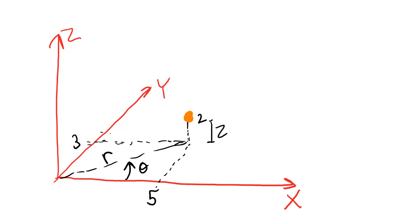Now the location of the point did not change, but the three numbers that I would use to represent the location of the point did change. In the Cartesian system, the x, y, z position of this point is 5, 3, 2.